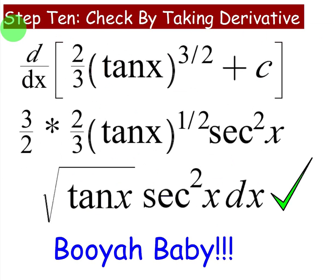Now we take the derivative for step 10 to check. We will use basically the power rule with the chain rule, and we get the square root of tangent of x secant squared x dx, which is what we originally started with.